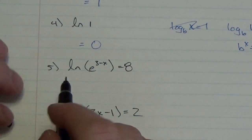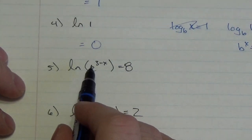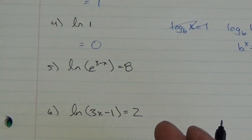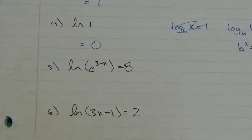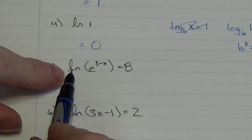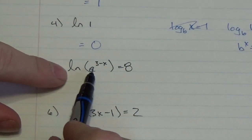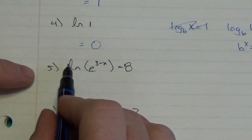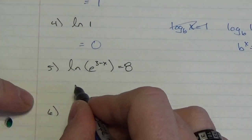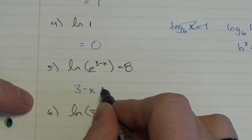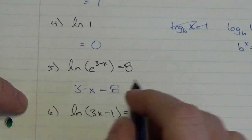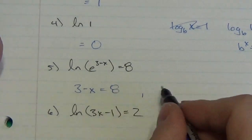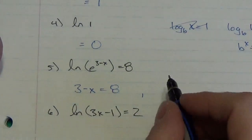Now: the natural log of e to the quantity (3 minus x) equals 8. Don't let this one throw you off — those are canceling each other out and the left-hand side is simply 3 minus x equals 8. Bring the x over and the 8 over, and I get that x is going to be equal to negative 5.